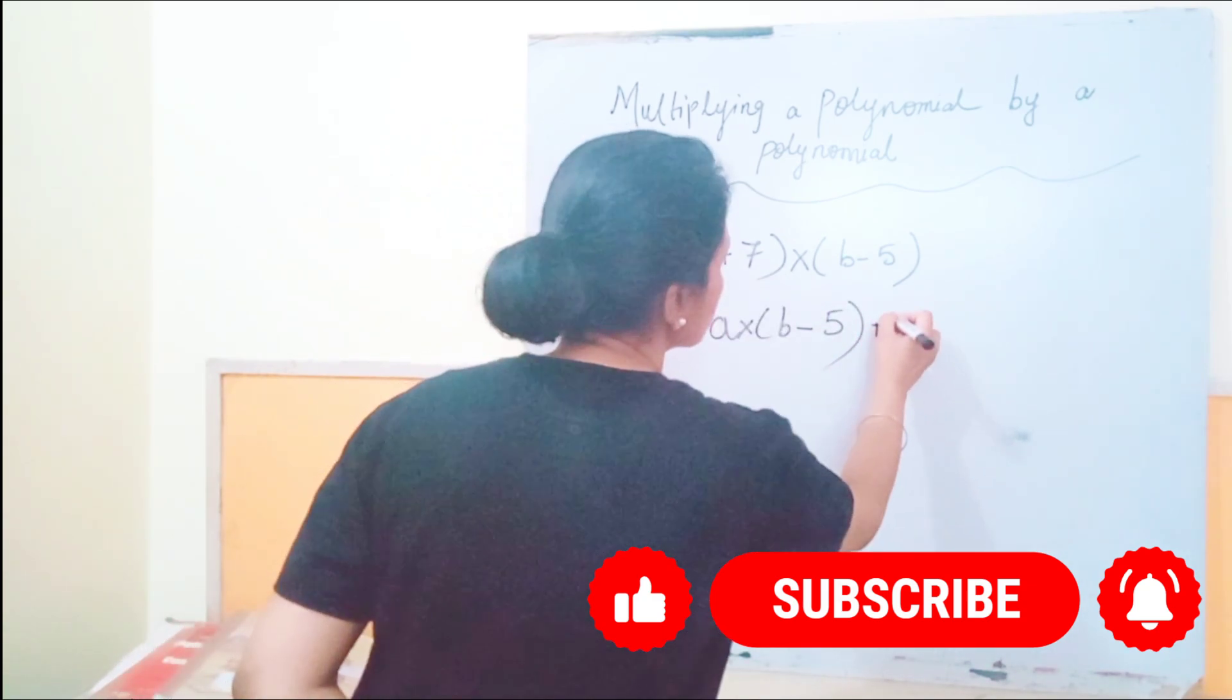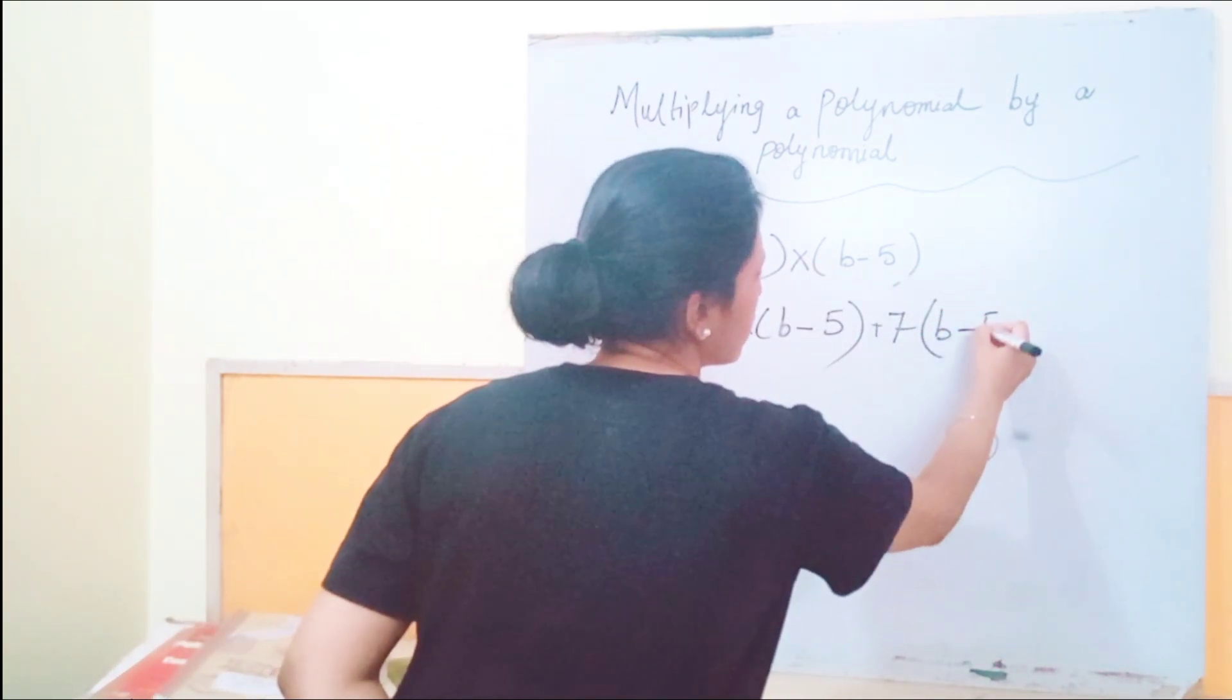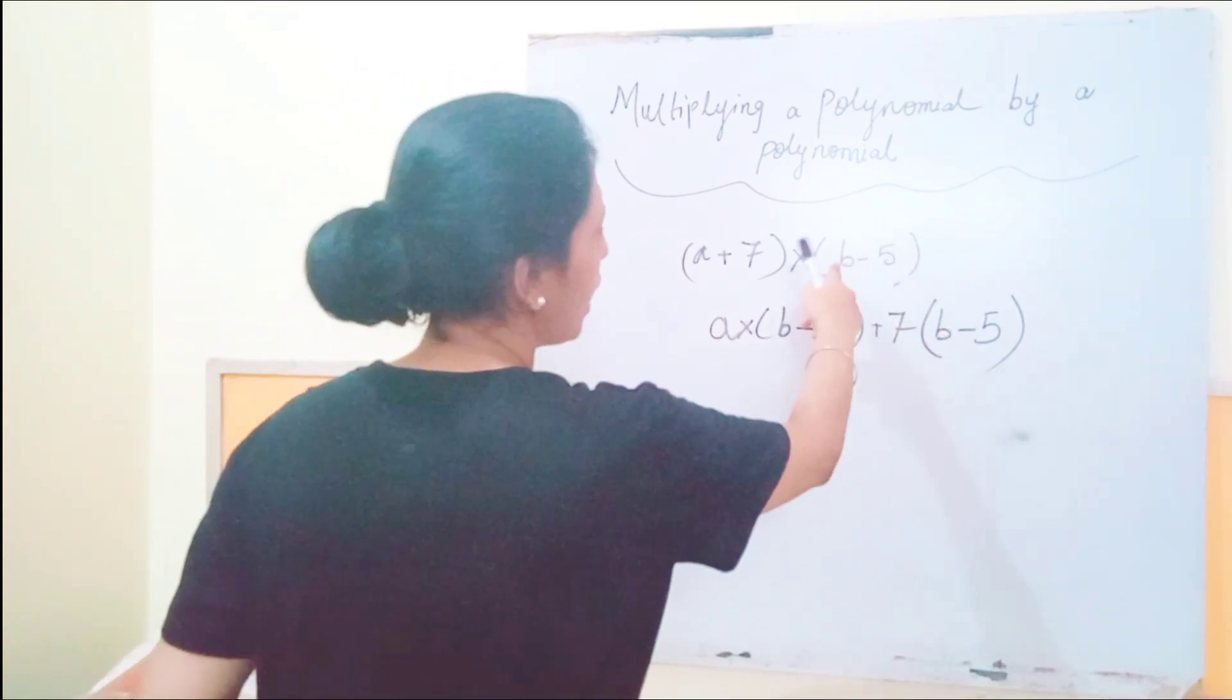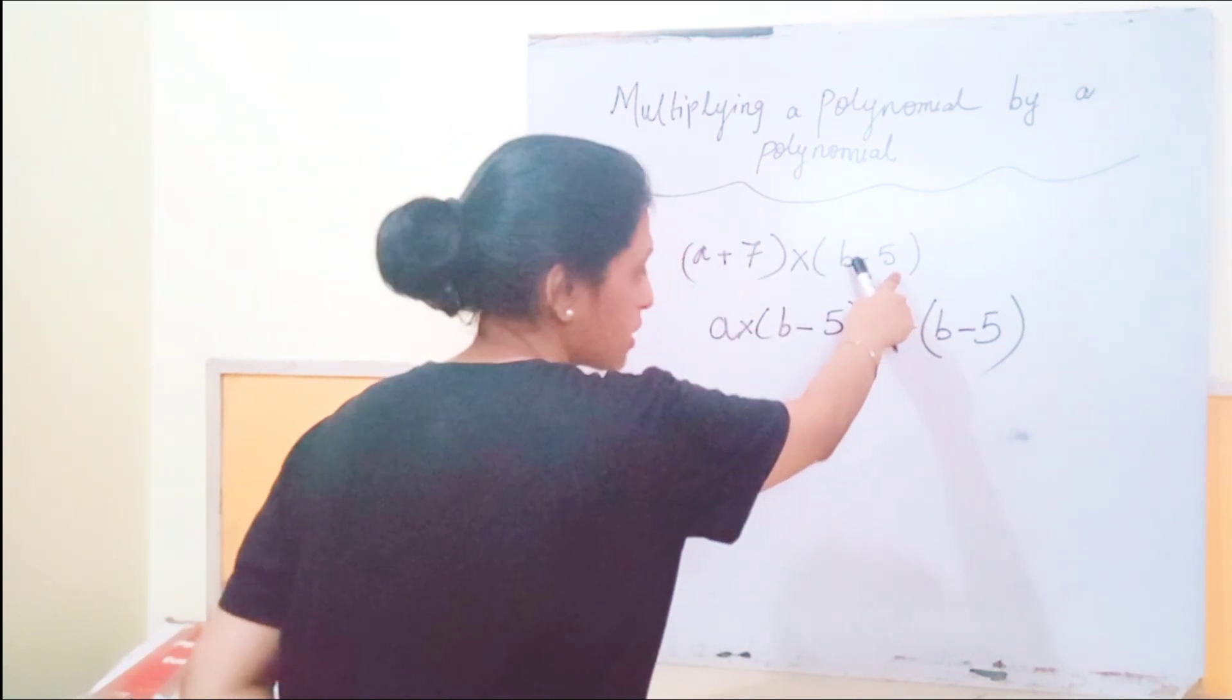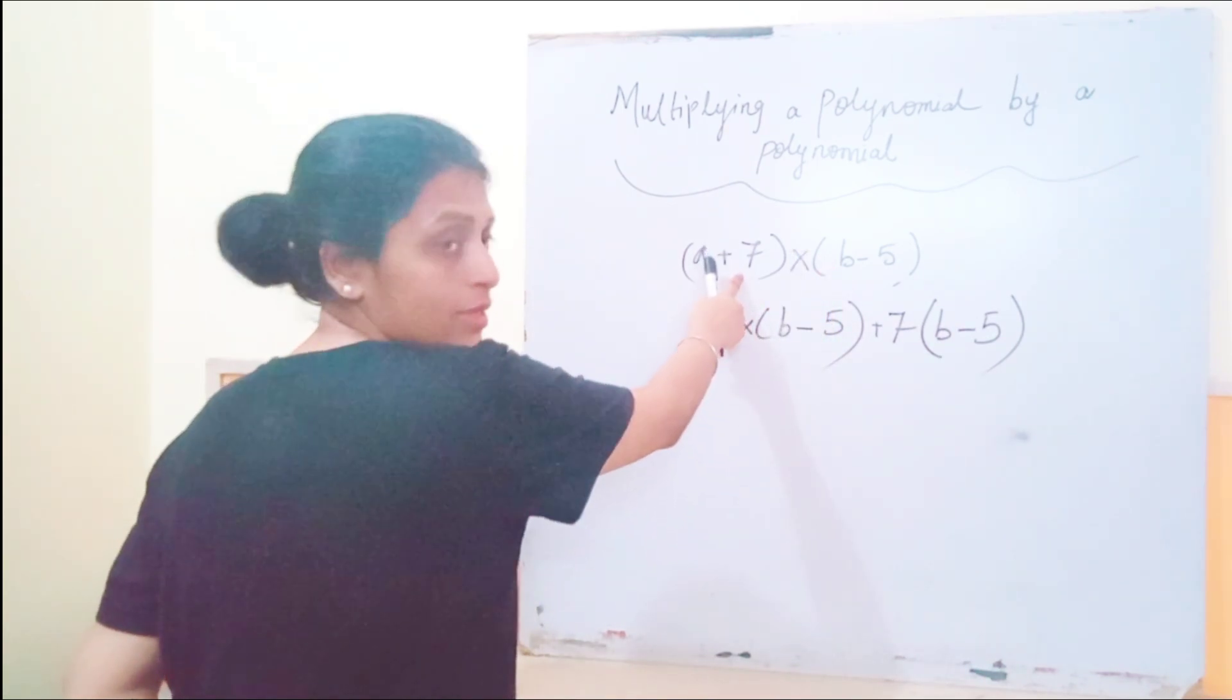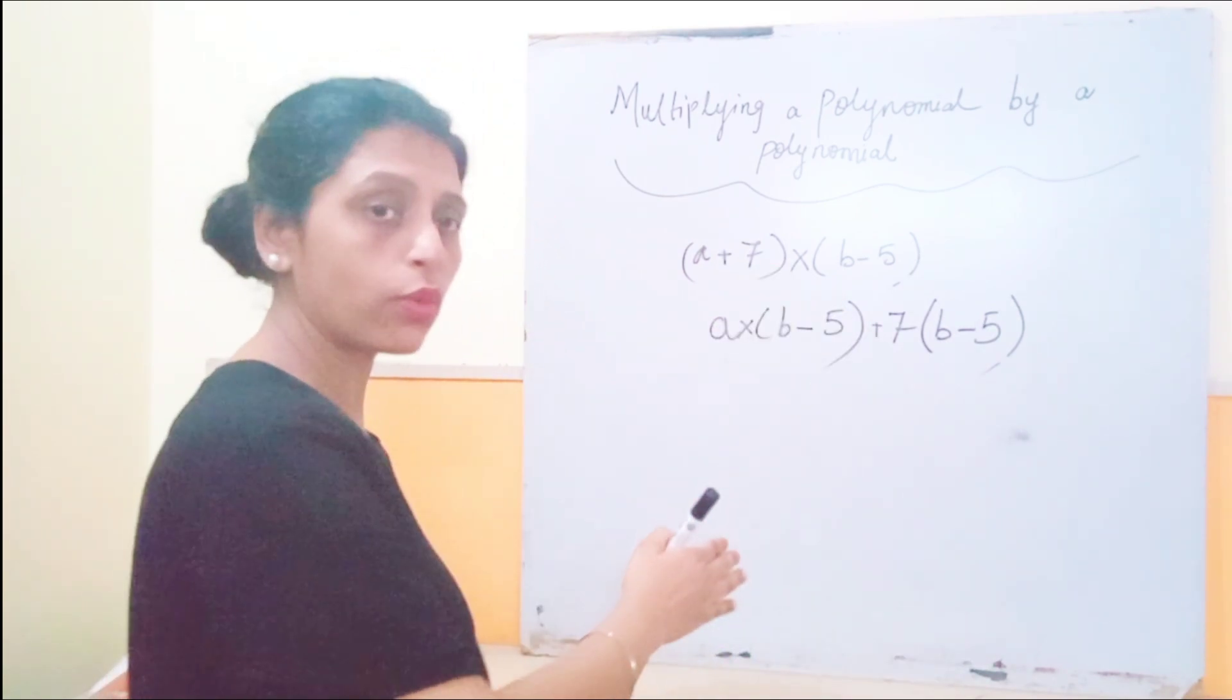We are going to multiply this 7 with both the terms, with both the terms of this binomial b minus 5. You can do it in either ways. That means, of course, if this is, I have multiplied with both terms, what can you do likewise? This is the second binomial.